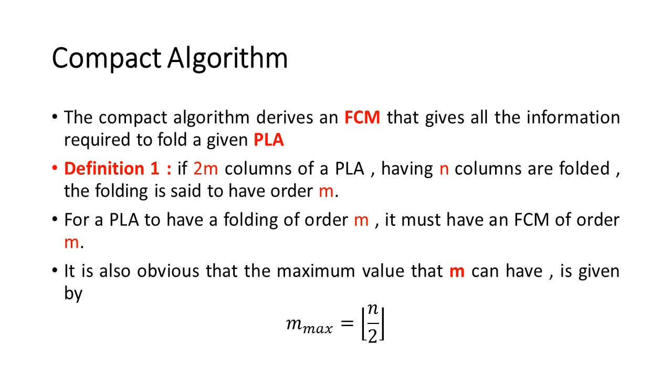Definition 1: If 2m columns of a PLA having n columns are folded, the folding is said to have order m. For a PLA to have a folding of order m, it must have an FCM of order m.